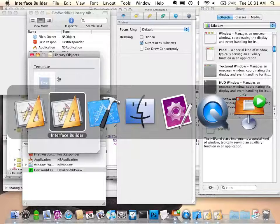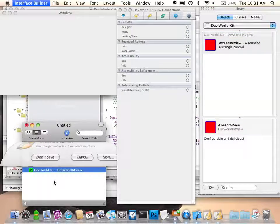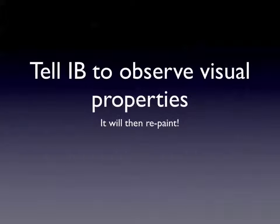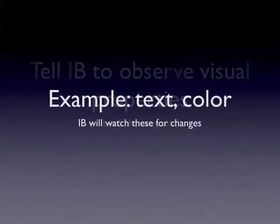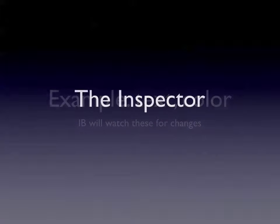We now have icons, which is fantastic. As I mentioned, if you tell Interface Builder to observe the visual properties of your object through key value observation, it will repaint as necessary. These include the text of a label, the color — anything visible.